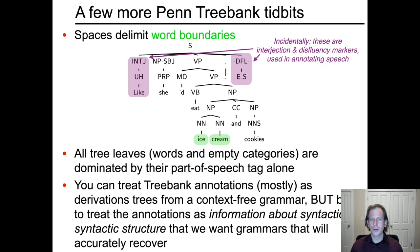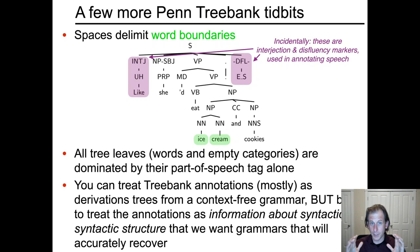Very generally speaking, you can treat treebank annotations mostly as derivation trees from a context-free grammar. But a lot of the time, it's useful to think of the annotations not as saying 'here's the exact grammar you want,' but rather as information about syntactic structure that the grammar you want should be consistent with. For example, you might prefer more or less phrasal annotation. But the kinds of information that syntax specifies — like what words are grouped together — tells us about the statistics of English.